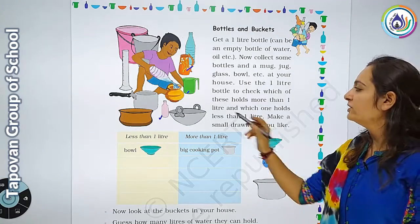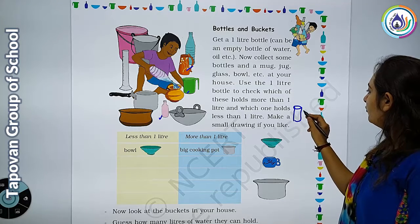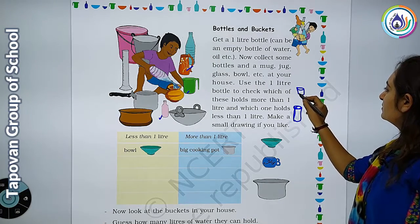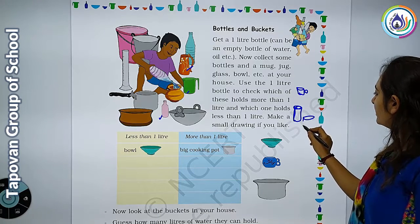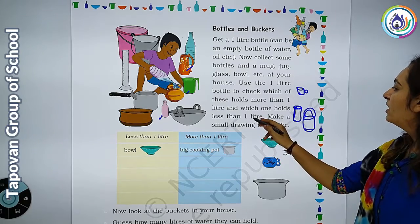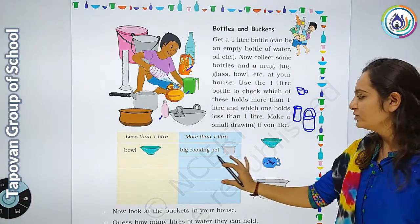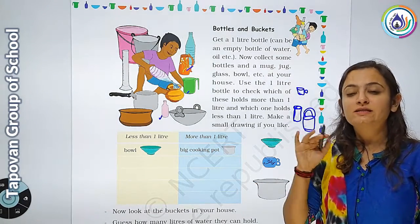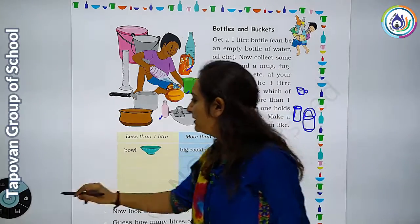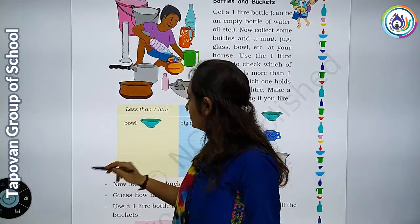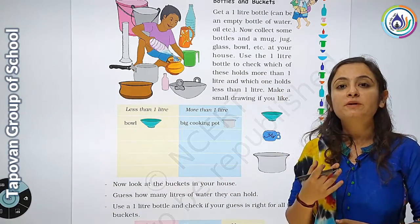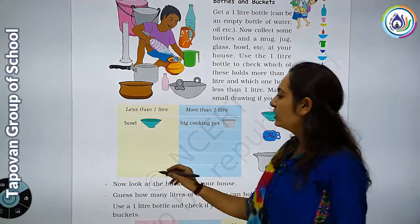Now look at this bottle. You can make a small drawing if you like. Think about which vessels are in your house that hold water — more than one liter or less than one liter. For example, there is a glass.